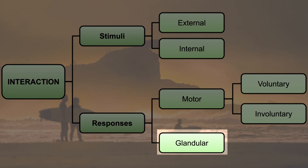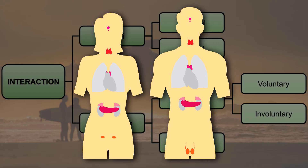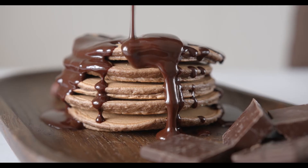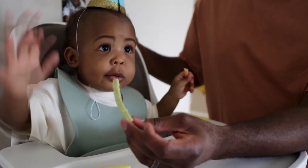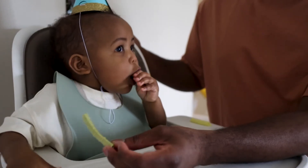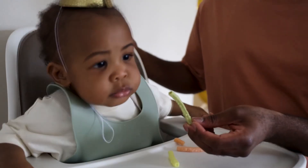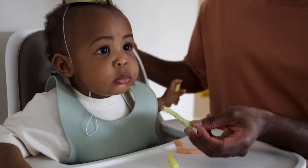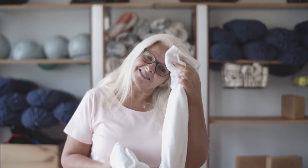Glandular responses. This involves your glands releasing something. Glands are little organs inside your body that make things like sweat, saliva or hormones. For example, when you see or smell delicious food, your mouth starts to water because your salivary glands make saliva. This is your body's response to getting ready to eat. Another example is when you feel hot and your body releases sweat.